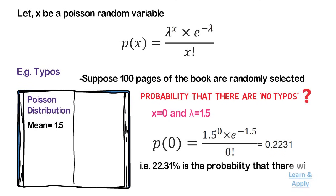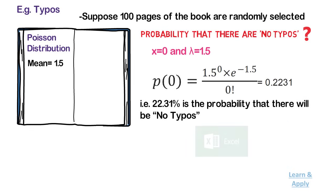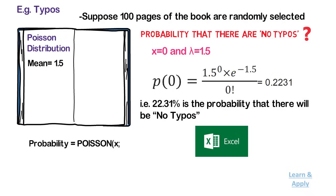That is, 22.31% is the probability that there will be no typos. We can also use Excel to find probabilities related to Poisson distribution — the number of occurrences x in an interval — calculated as: P = POISSON(x, lambda, 0). For the above example, P(0) = POISSON(0, 1.5, 0) = 0.2231.